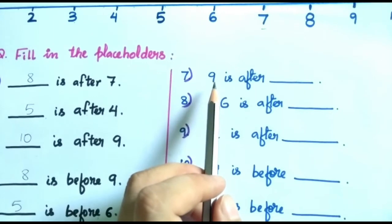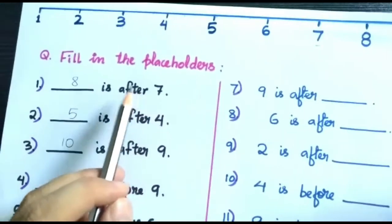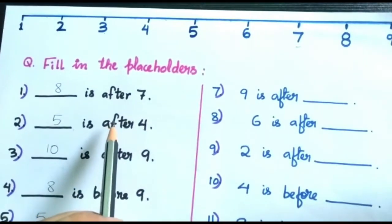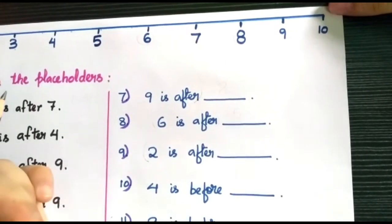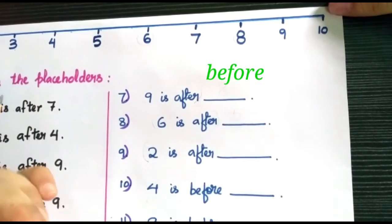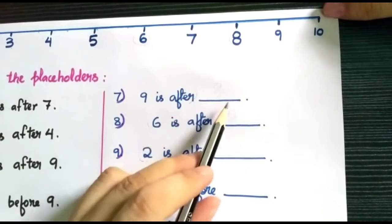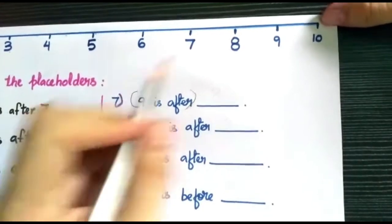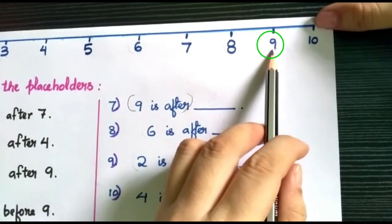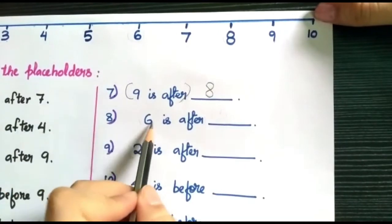Children, look at this question: nine is after dash. But here it's written dash is after seven, so both questions are quite confusing, so let me explain properly. Children, tell me: what is the opposite of after? Opposite of after is before, right? And opposite of before is after. So let's start with question number seven: nine is after dash. Nine is after — matlab nine jo hai aage hai, aage wali number. So nine is after, then what is before? Before number is eight.